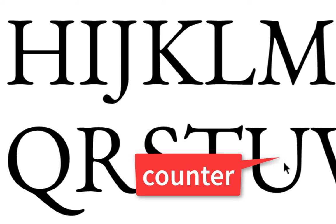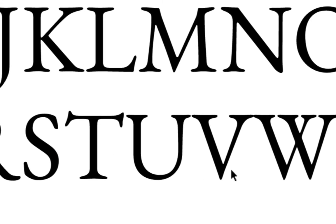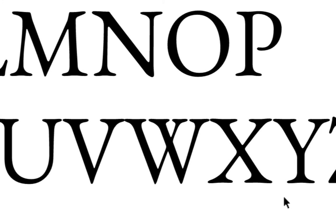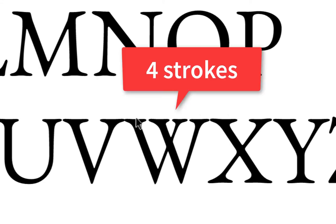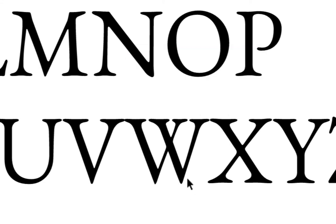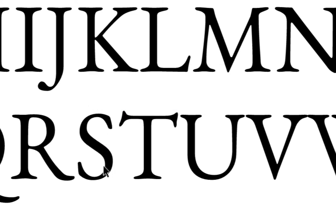I wouldn't describe a 'v' with a bowl and counter — instead, the 'v' has a vertex and a crotch. For 'v's,' 'x's,' and similar letters, I'd just say strokes: the 'x' has two strokes, a primary and a secondary; the 'w' has two primaries and two secondaries. I wouldn't talk about arms shooting out for those, since they vary based on design. The 's' has something called a spine — that's the curvature where the bottom hook meets the top hook.